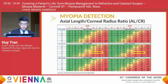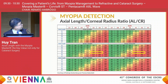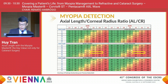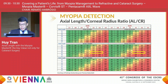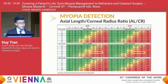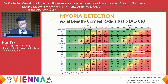Acknowledging further work from the Brian Holden Vision Institute, a 10-year-old girl with an axial length of about 25 millimeters and an ALCR ratio of about 3.1 would have approximately 87% probability of being myopic, and that rate increases significantly to 98% when the ALCR reaches 3.2. Therefore, to optimize the diagnosis and monitoring of myopia progression, eye care practitioners should consider age, gender, spherical equivalent, axial length, and ALCR ratio.